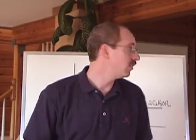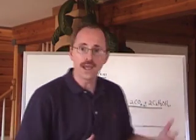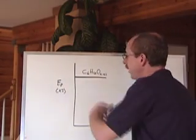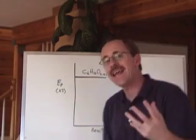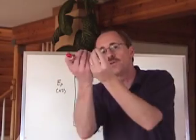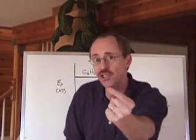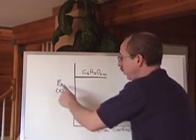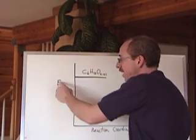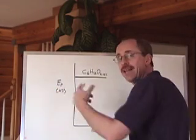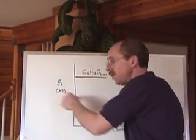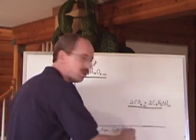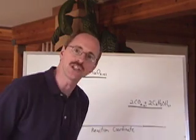Here we have the glucose, and in the end, because it was a release of energy — potential energy, because it's bond energy — we graph this as potential energy. We always write the unit in kilojoules versus reaction coordinate.